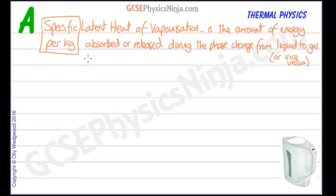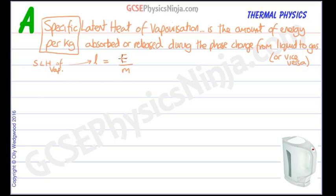The equation for specific latent heat is L equals the energy absorbed or released per kilogram, so L = E/M. L is the symbol for specific latent heat of vaporization. E is the energy absorbed or released, and M is the mass of liquid changed into a gas or vice versa. We can add a subscript V to show it's vaporization rather than fusion.